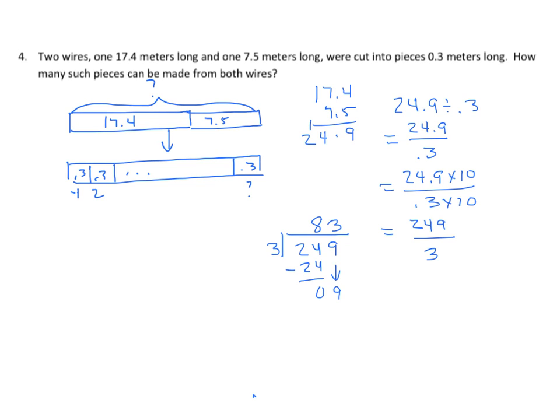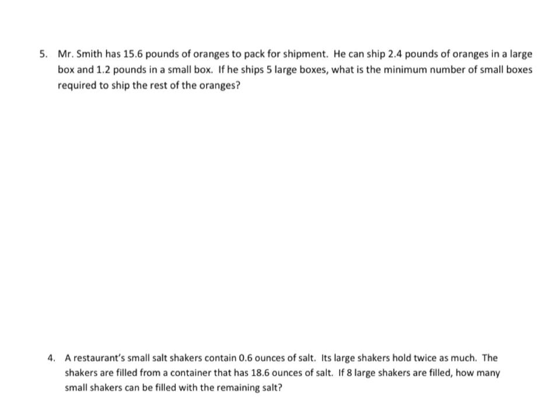We could also write this as a single expression: the sum of 17 and 4 tenths plus 7 and 5 tenths, all divided by 3 tenths. That will come in handy in future lessons. Now I have two problems — number 5 is from the practice set and number 4 is a very similar homework problem with all the same steps. I'll work one out for you, and you can do the same thing substituting different numbers.